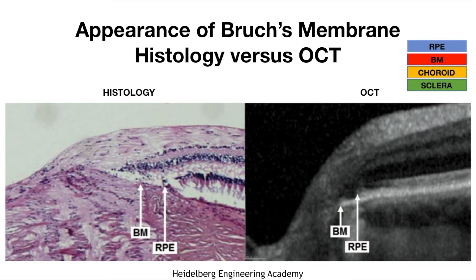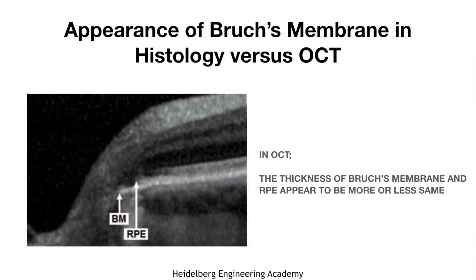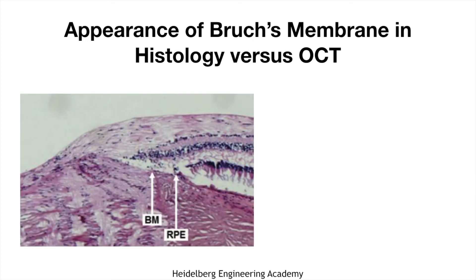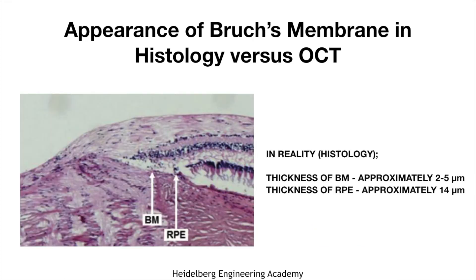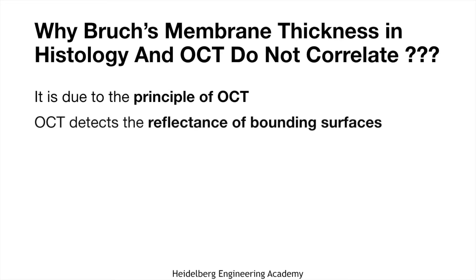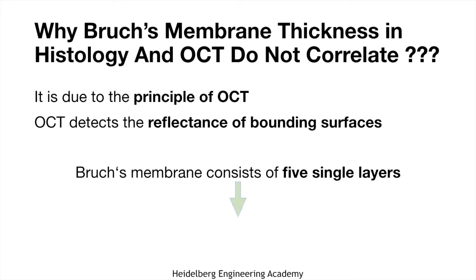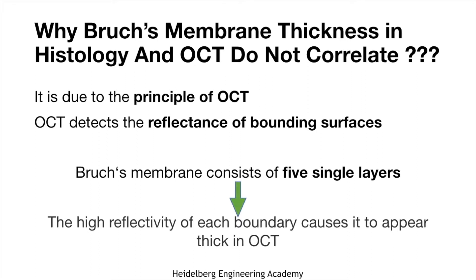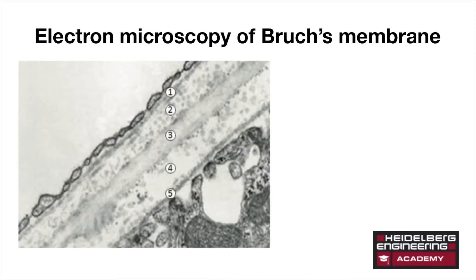Regarding the appearance of Bruch's membrane — histology versus OCT — in OCT the thickness of Bruch's membrane and RPE appear to be more or less the same. But in reality, that is in histology, the thickness of Bruch's membrane is only one third of the retinal pigment epithelium thickness. Why does Bruch's membrane appear thicker in OCT? It is due to the principle of OCT, which detects the reflectance of bounding surfaces. Bruch's membrane consists of five layers, and the high reflectivity of each boundary causes it to appear thicker in OCT.